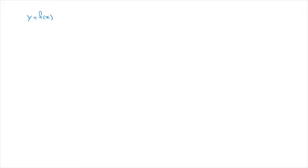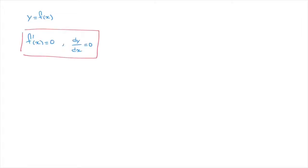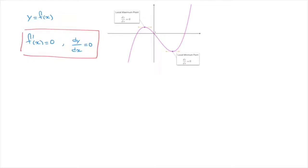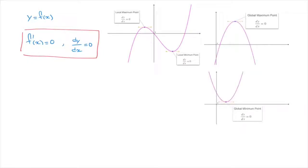In other words, a stationary point is any point along the curve's length at which f dash of x equals zero, which we could also write as dy/dx equals zero. Stationary points can be local maximum or local minimum points, or even global maximum and global minimum points, and also horizontal points of inflection.